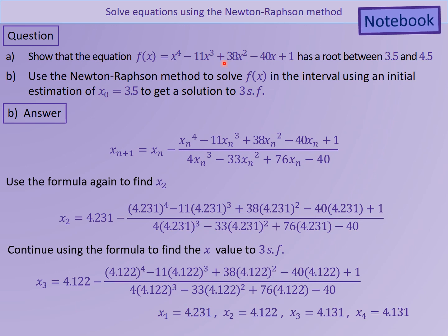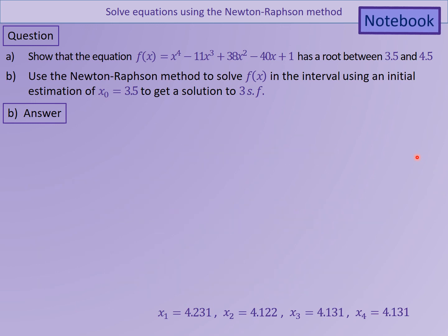And if you try substituting 4.13 back into the original, you'll notice that it gets very close to zero. So the answer, just to make sure we write it out at the end, is 4.13 to three significant figures, but you still go to four just to confirm it.